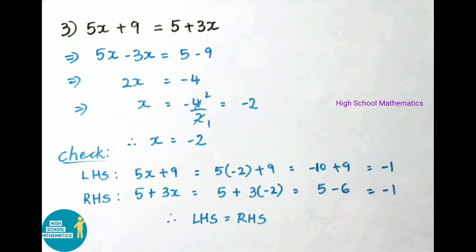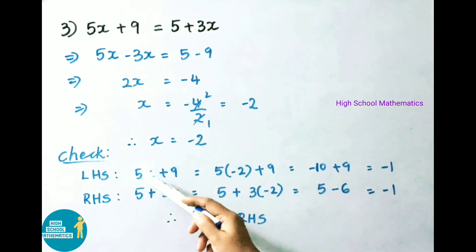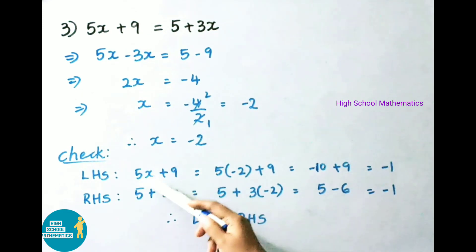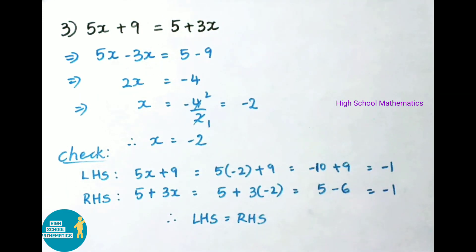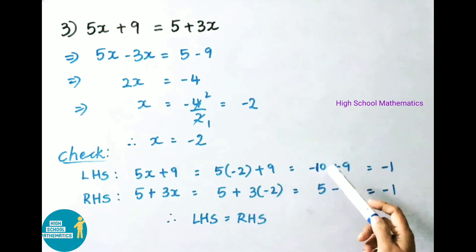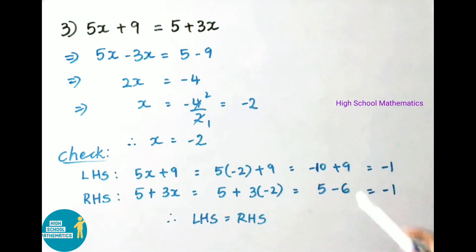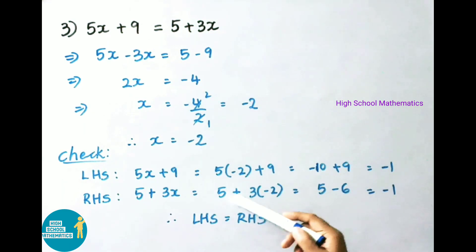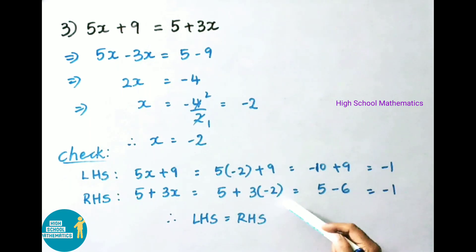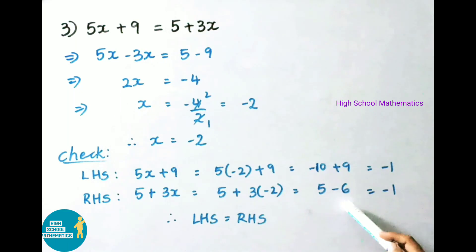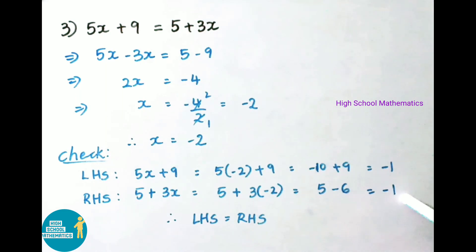Check: LHS is 5x + 9 = 5 × (−2) + 9 = −10 + 9 = −1. RHS is 5 + 3x = 5 + 3 × (−2) = 5 − 6 = −1. LHS and RHS both equal −1. Therefore LHS = RHS, hence result is correct.